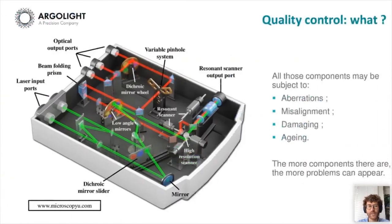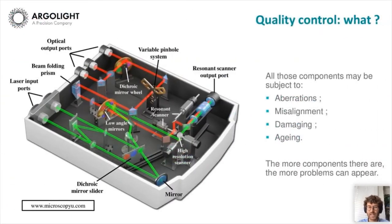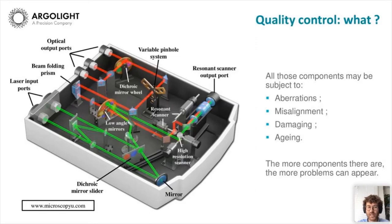If we take a more complex system like a confocal, you see that there are many more components, more optics, more moving parts that can introduce errors, aberrations, misalignments, damage, or aging. The more components there are, the more problems can appear.